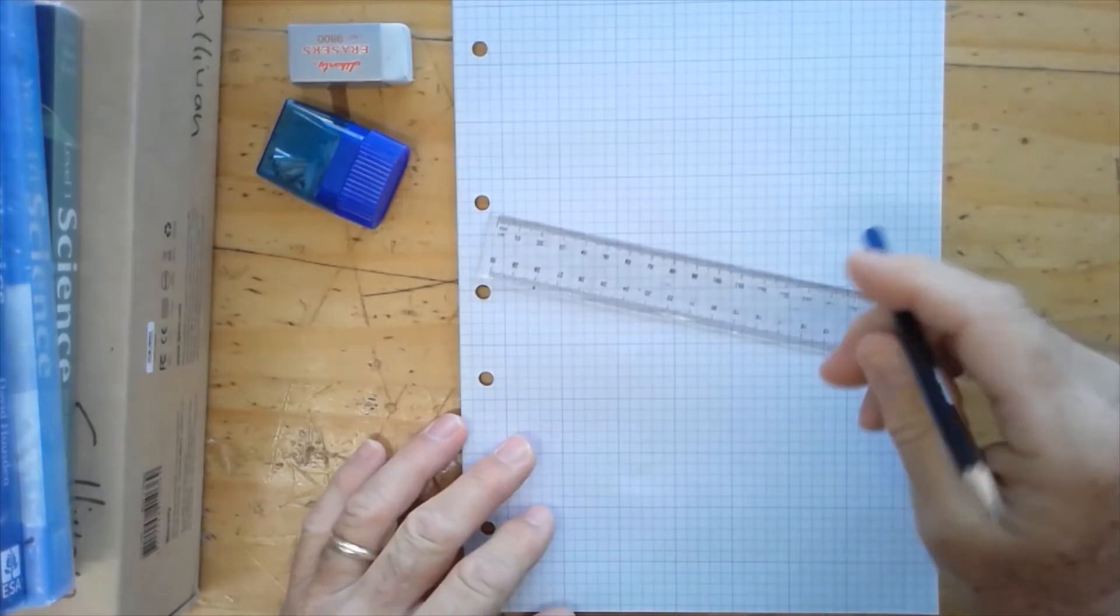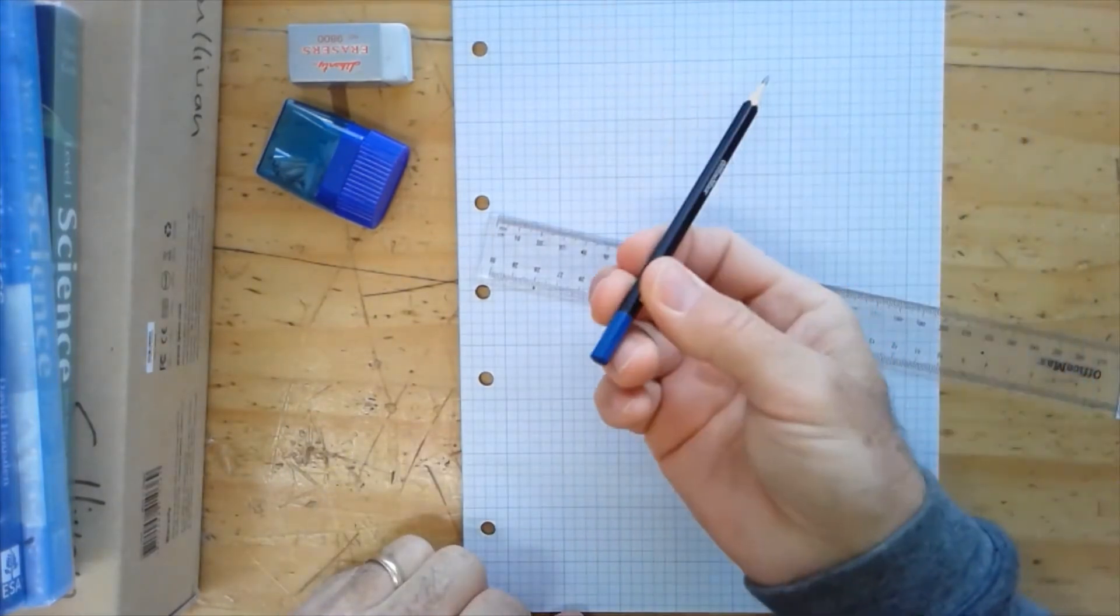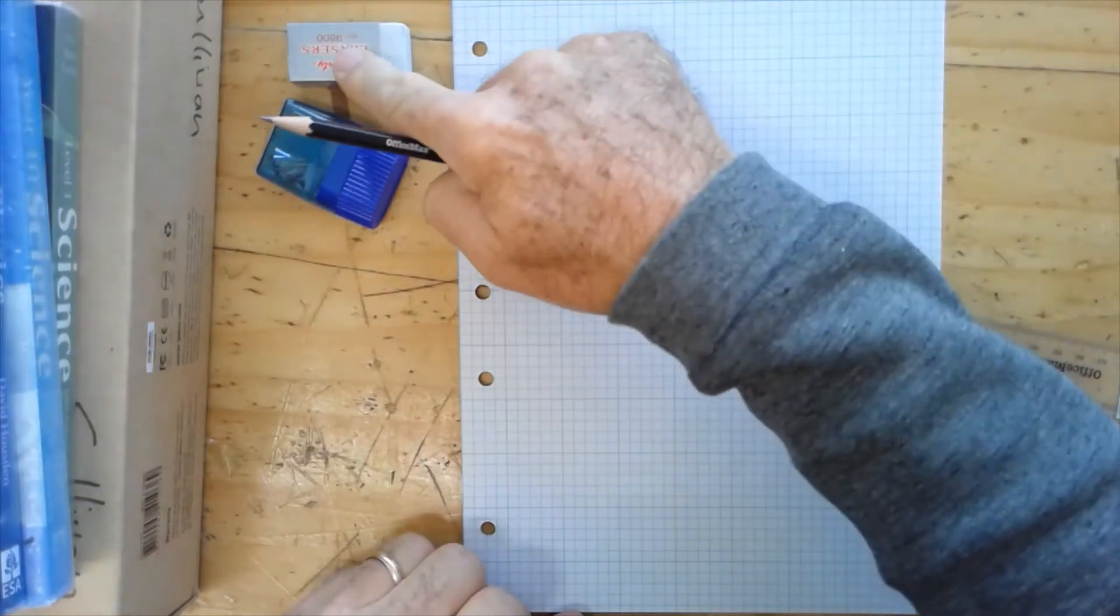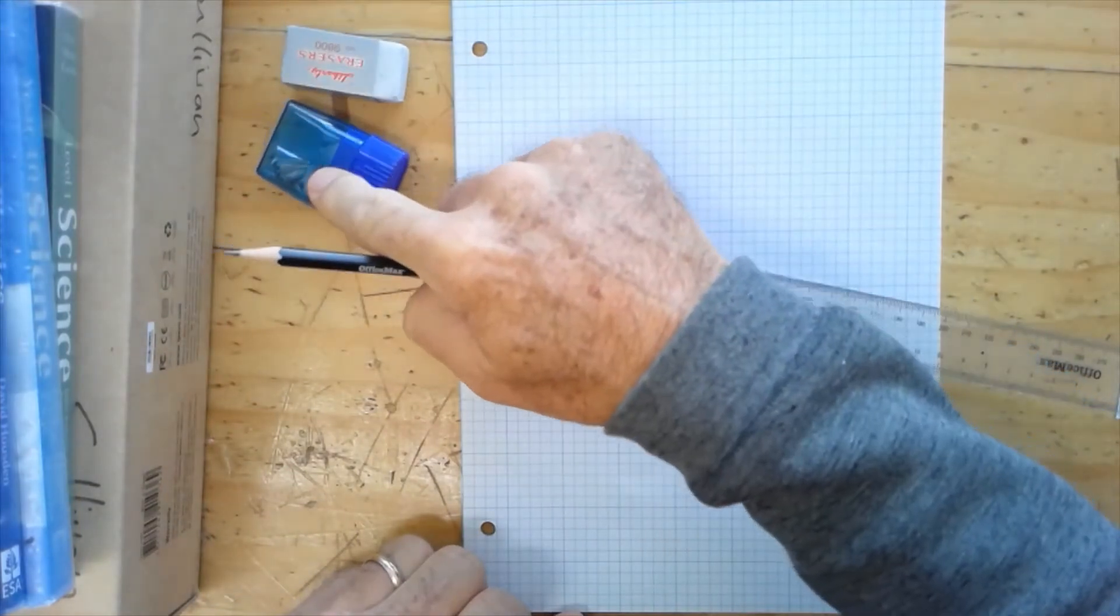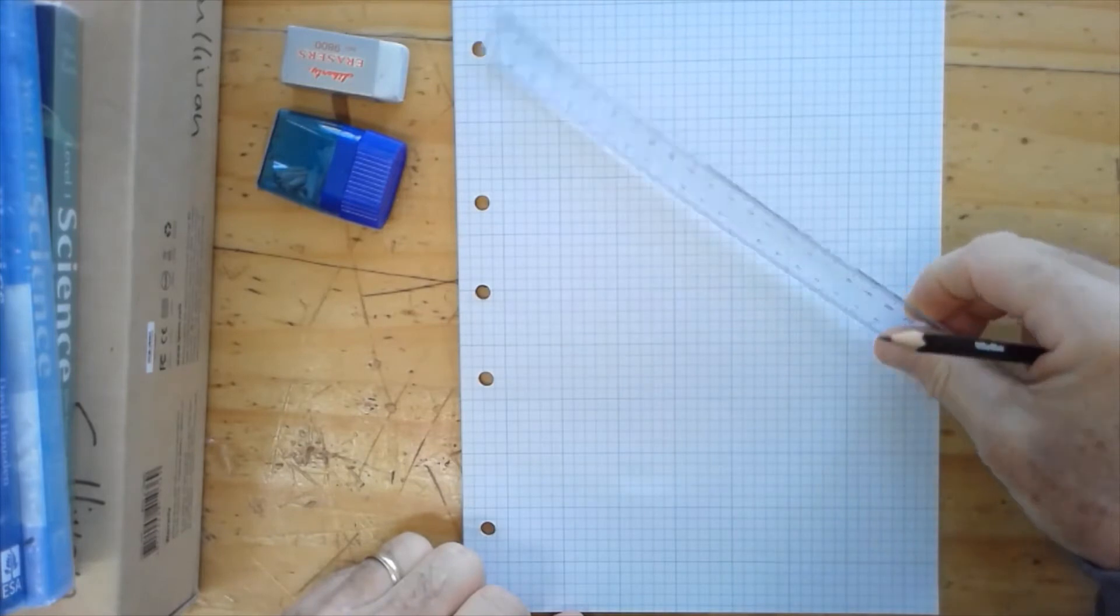First thing first, we're going to use a pencil, always use a pencil, have your rubber at hand, your pencil sharpener at hand, and you'll want to use a clear ruler.